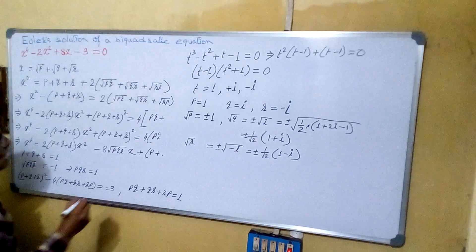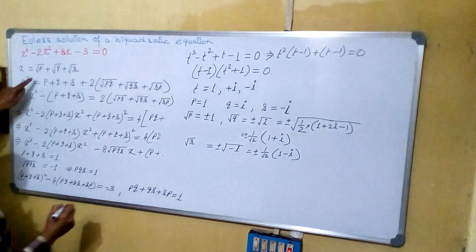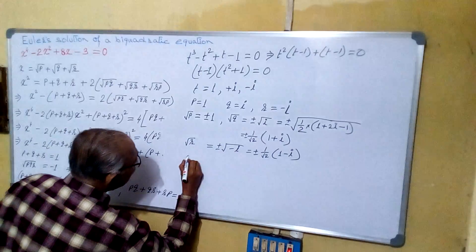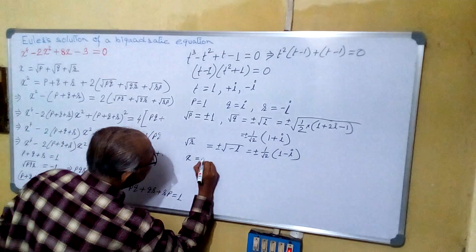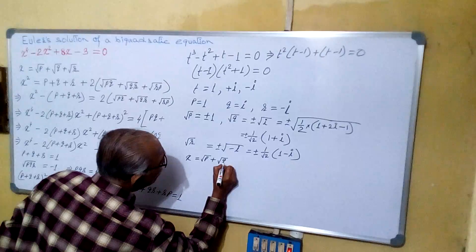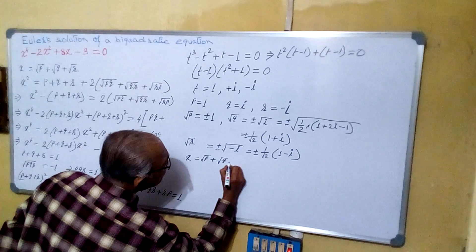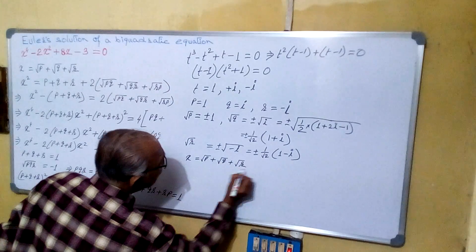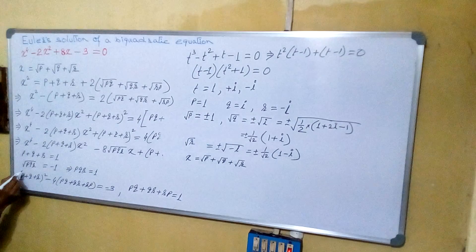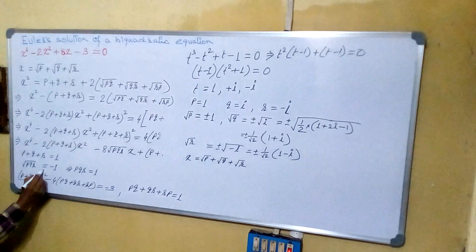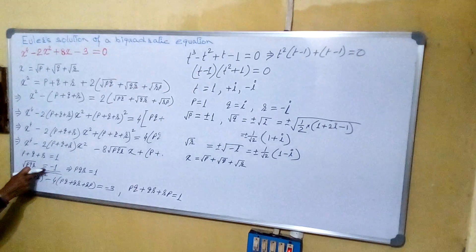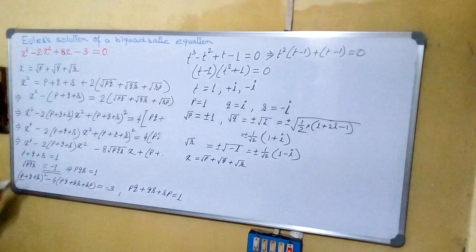Our X is root P plus root Q plus root R. So X equals to root P plus root Q plus root R. Here in this particular case, root PQR equals to minus 1, which is a negative quantity.